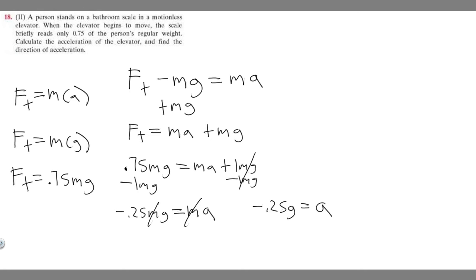We just get minus 0.25 g equals a, and so essentially we can just solve for a. G is just going to be the force of gravity, and so we can estimate that by just saying it's 9.8 meters per second squared. So if I plug it in, minus 0.25 times 9.8 is going to give us our acceleration, and so if you do this, you should get a equals minus 2.45 meters per second squared.